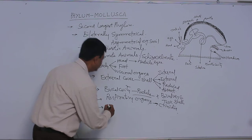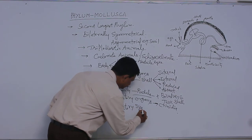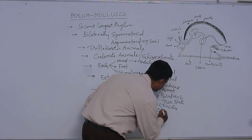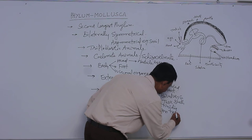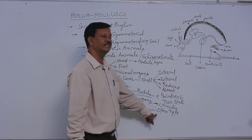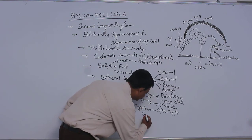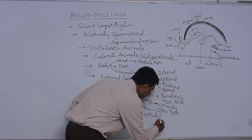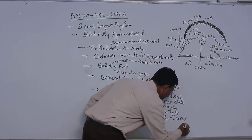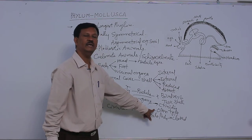In the circulatory system, an open type of blood vascular system is present. Blood is not found in the blood vessels but in the body cavity — that is known as the open type of blood vascular system. But in Cephalopoda, a closed blood vascular system is present, where blood is found in the blood vessels. Majority of molluscs possess the open type of blood vascular system.